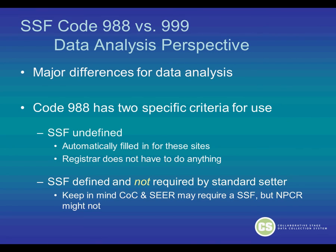From the data analysis perspective, there is a major difference. Code 988 has two specific criteria for use. Either the Site-Specific Factor is undefined — in this case, usually the software will automatically fill in for these sites and the registrar does not have to do anything — or the Site-Specific Factor is defined and not required by the standard setter.